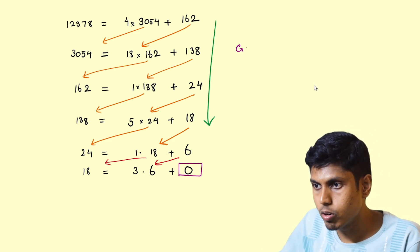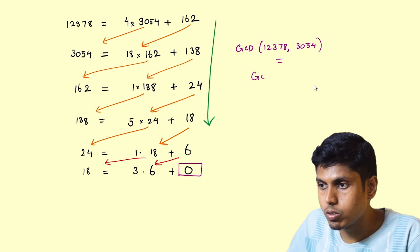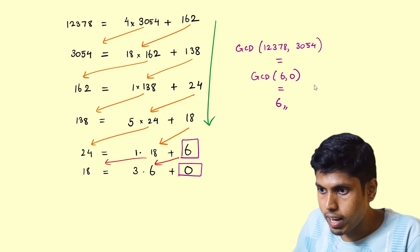So thus, the GCD of 12378 comma 3054 is nothing but the GCD of 6 comma 0, which is 6. That is the value of the remainder obtained just before or just preceding the remainder 0.